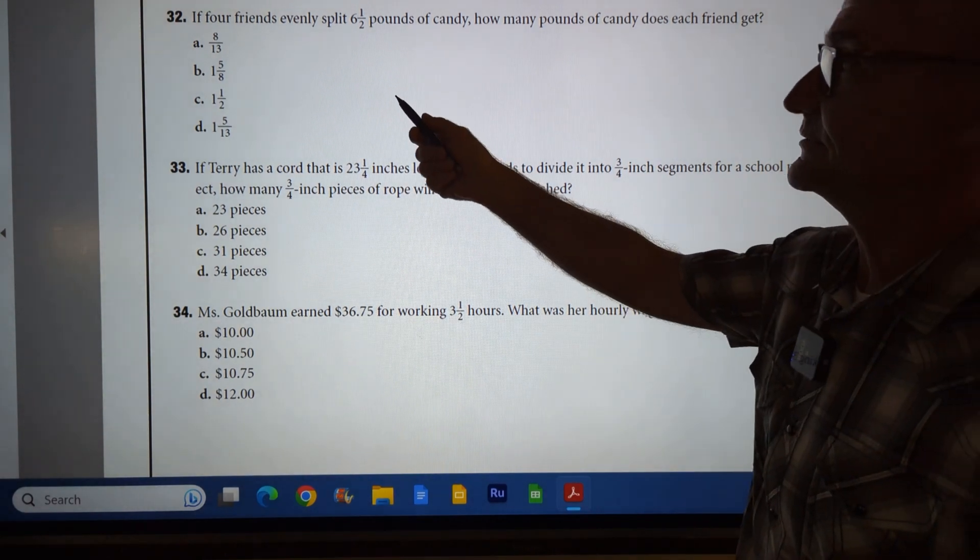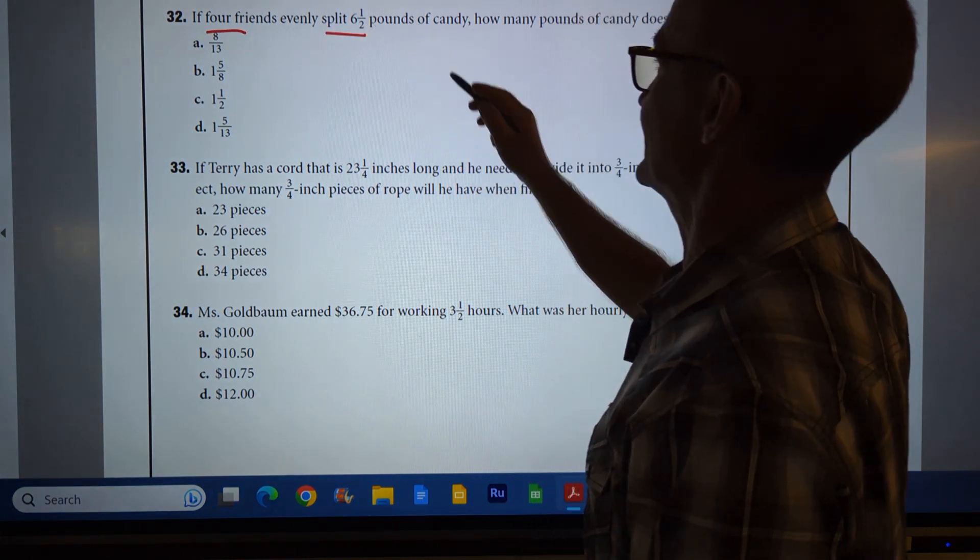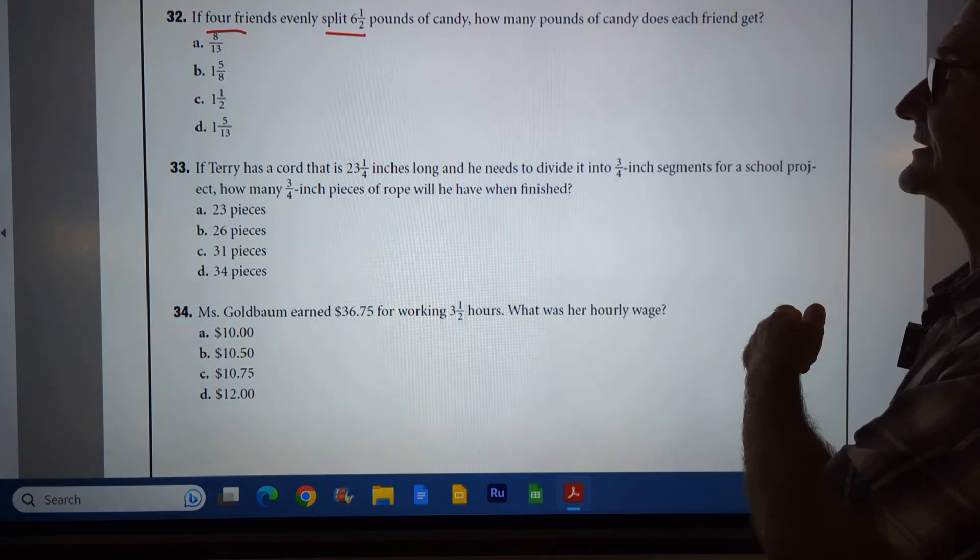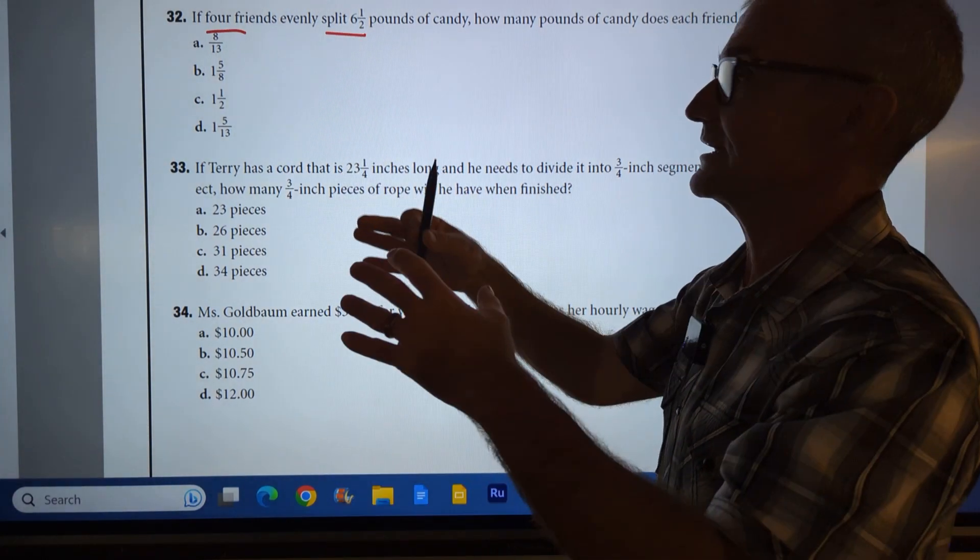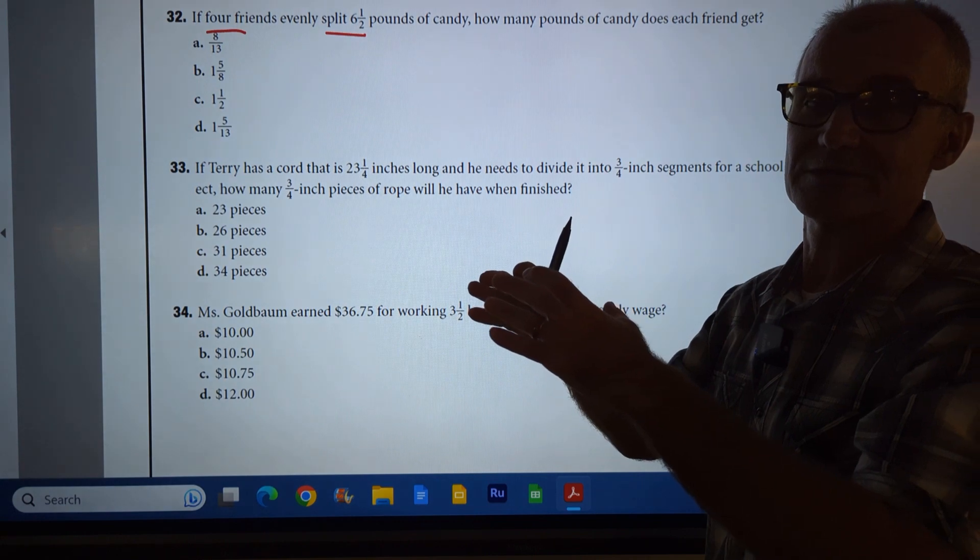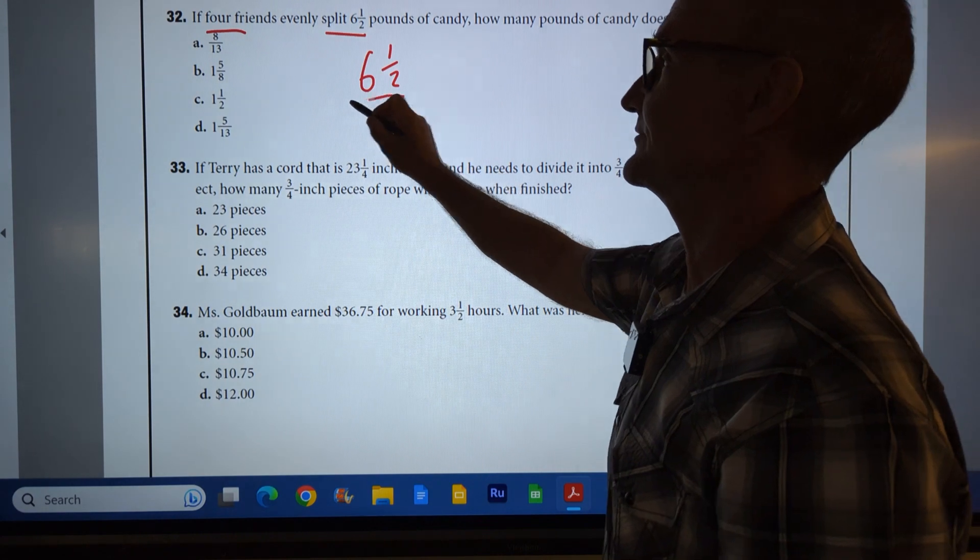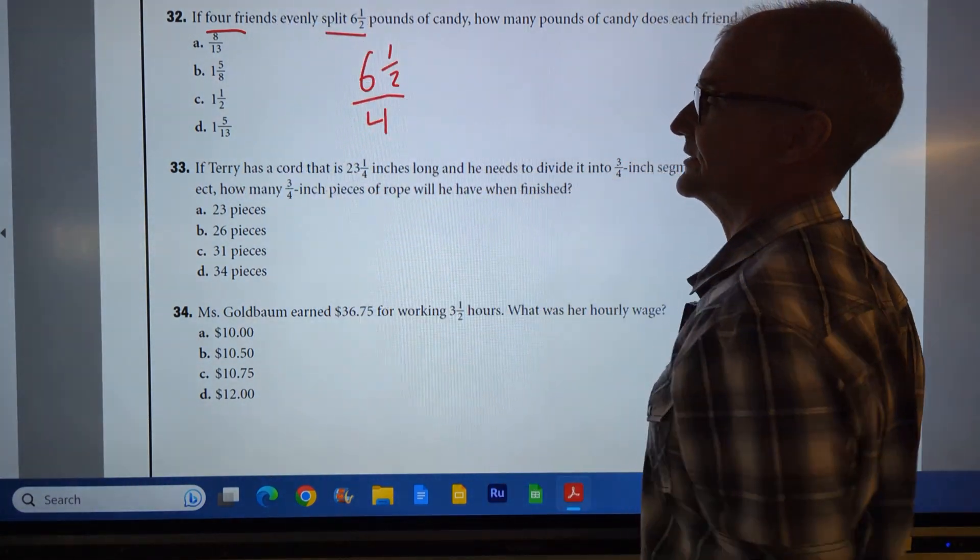Number 32, four friends split six and a half pounds of candy. How many candies does each friend get? So the total amount is six and a half, and I know I've got to split that by four. So what that means is I have six and a half divided by four, right? It says the total amount, and I've got four friends.